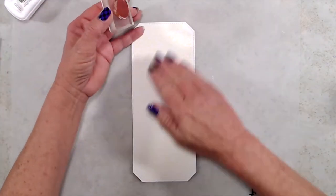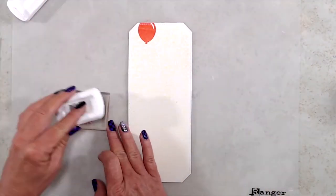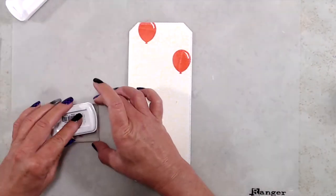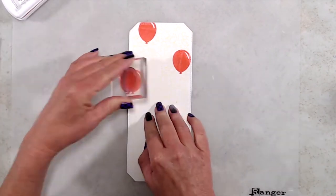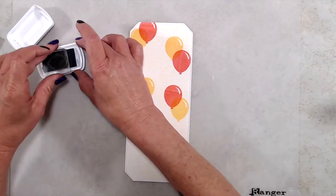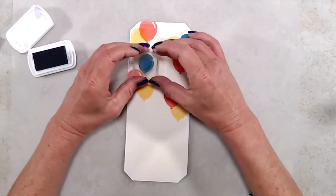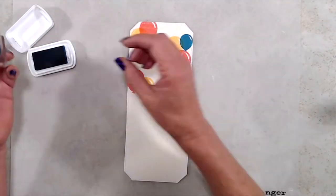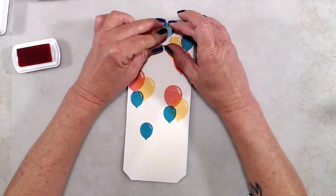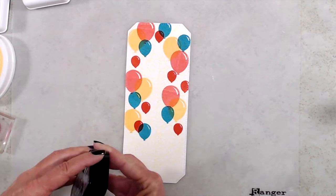Next I used the happy everything stamp set and randomly stamped a bunch of colorful balloons. While I was stamping the balloons, I made sure to overlap them and I tried to keep them in groupings of three when I first started out. Then I filled in some of the white space with the smallest balloon, but I wanted to make sure that I had a blank spot down the center of that panel so that the sentiment wouldn't get lost, because it's going to be mounted on another clear panel.